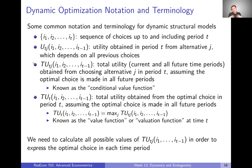We also want to think about not just utility in one time period, but the total utility of this time period and all future time periods obtained from choosing alternative J in period T. As discussed in the last video, people aren't thinking about just utility in one period, but the full future stream of utilities. This total utility term — what the decision maker gets in this and all future periods — is sometimes known as the conditional value or valuation function.